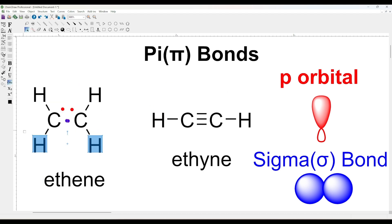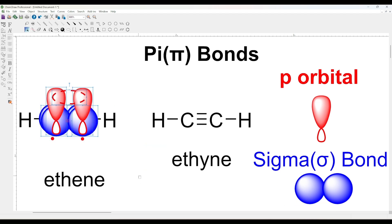In triple bonds, the shortest and the strongest of the covalent bonds, there is one sigma bond and two pi bonds.